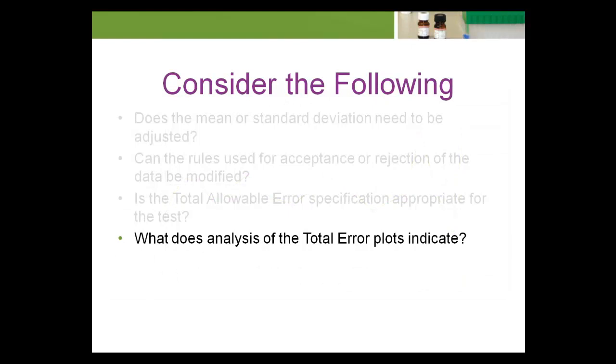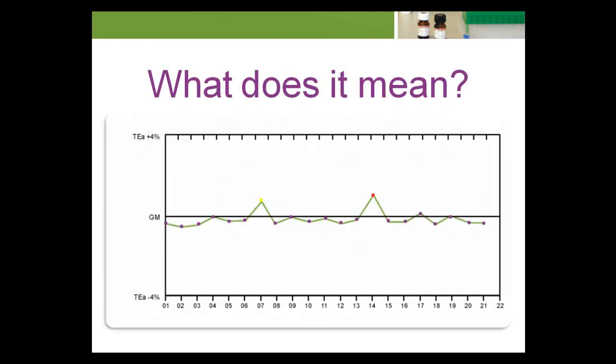Let's address the last question: What does analysis of the total error plots indicate? When process control rejections are few and well within the total allowable error limits, it means the QC protocol is working effectively and is appropriate. It also indicates less stringent rules could be used — for example, a 1-4s rather than a 1-3s rule, or a multi-rule approach may be eliminated.